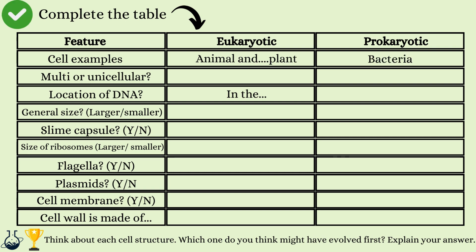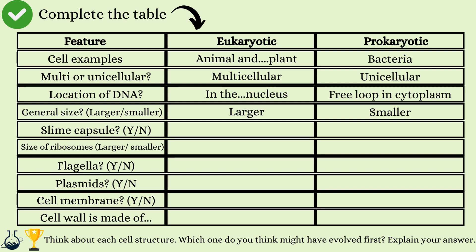The top row asks for cell examples: eukaryotic cells are animal and plant; prokaryotic is bacteria. Eukaryotic organisms are multicellular and prokaryotes are unicellular. Eukaryotic DNA is in the nucleus; prokaryotic DNA is in the cytoplasm as a free loop. Eukaryotic cells are larger than prokaryotic cells. Eukaryotic cells do not have a slime capsule — prokaryotes do. Eukaryotic cells do not have flagella — prokaryotic cells do. No and yes for plasmids. Yes for both cell membranes.